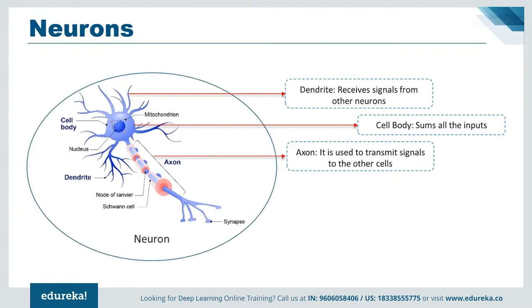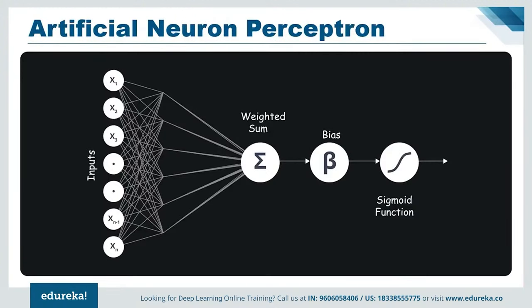If we focus on the structure of a biological neuron, it has dendrites which are used to receive inputs. These inputs are summed in a cell body and using the axon are passed on to the next biological neuron. Similarly, a perceptron receives multiple inputs, applies various transformations and functions, and provides an output. Just as our brain consists of multiple connected neurons forming a neural network, we also have a network of artificial neurons called perceptrons to form a deep neural network.